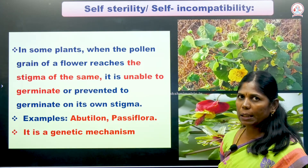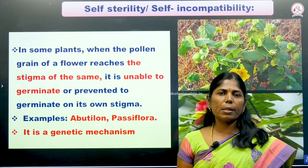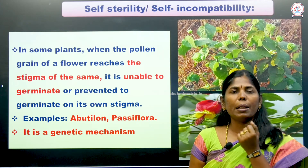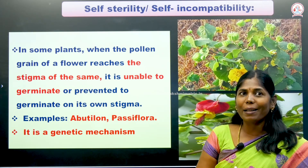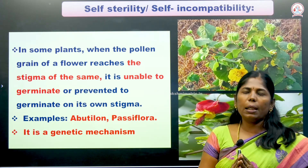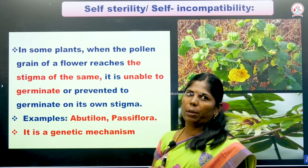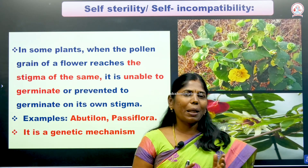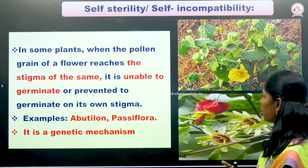Finally, self-sterility or self-incompatibility. In some plants, when pollen grains of a flower reach the stigma of the same flower, they are unable to germinate or are prevented from germinating on their own stigma. This is a genetic mechanism. Examples are Abutilon and Passiflora. Due to this genetic mechanism, own pollen cannot be accepted by the stigma, so self-pollination is prevented and cross pollination must occur.